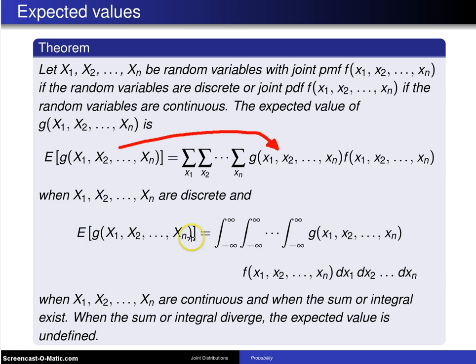the expected value of g of X₁ up to Xₙ, again, the g function shows up in front of the joint probability density function. It is an n-fold integral over the support script A, and that here is given by the limits minus infinity to infinity.